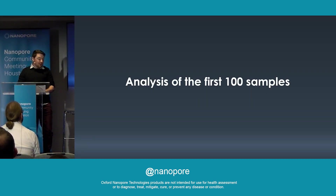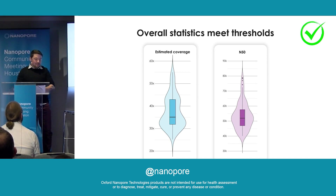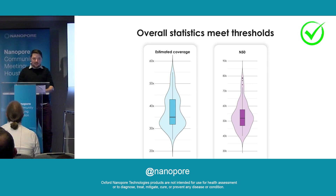I'll give you a brief overview of the analysis that we've done on the first 100 of the samples. The estimated coverage and N50s for these samples that we have uploaded to AWS meet the thresholds of being above 25X coverage and above 40 KB N50s, with many of the samples exceeding those thresholds.